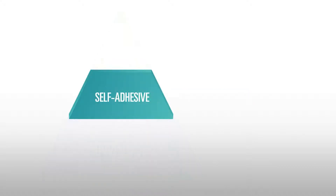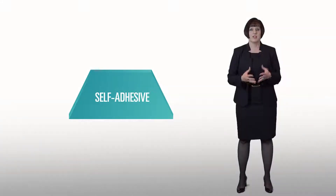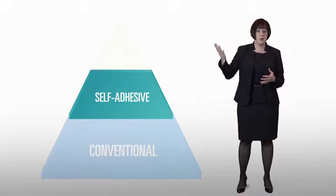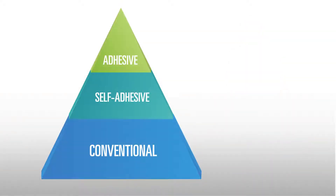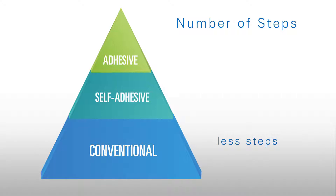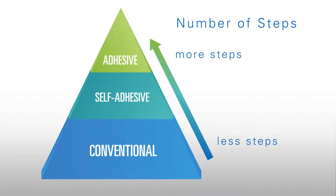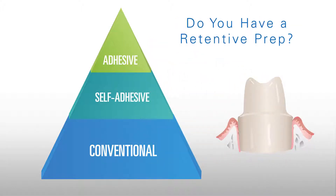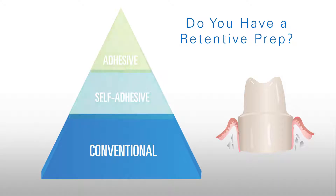Approximately 15 years ago, the self-adhesive cement category was created. It combines the ease of use of conventional cements with some of the great product attributes of adhesive cements. The main differences between these three categories come down to number of steps — you'll have fewer steps with a conventional cement and more steps with an adhesive resin cement. A retentive prep is absolutely critical when using a conventional cement or a self-adhesive cement.